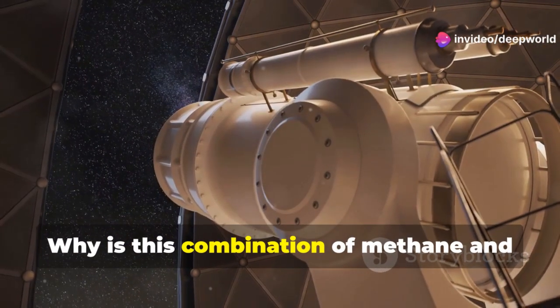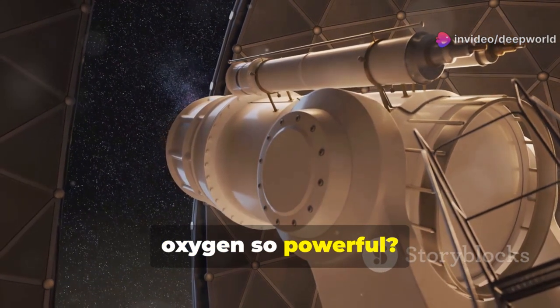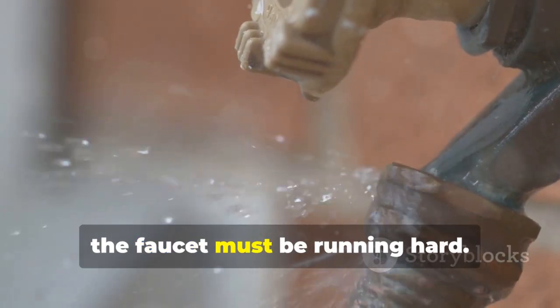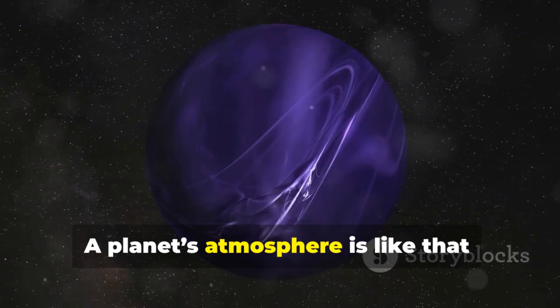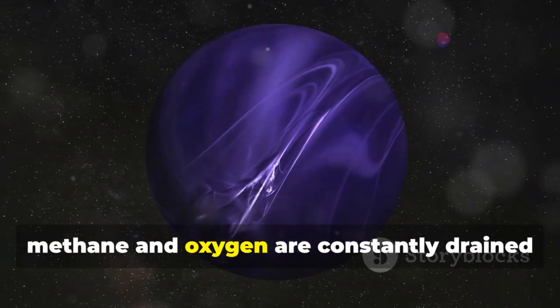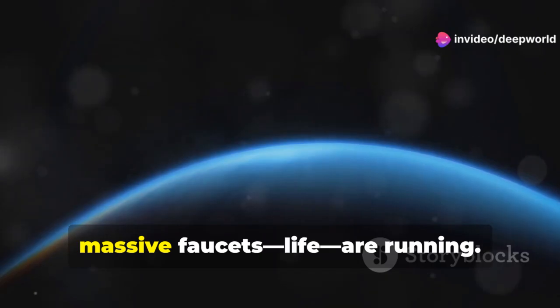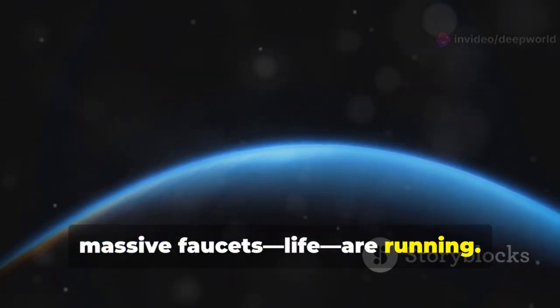Why is this combination of methane and oxygen so powerful? Imagine a bathtub with the drain open. If it's full, the faucet must be running hard. A planet's atmosphere is like that. Methane and oxygen are constantly drained by chemistry and sunlight. To find both in abundance means two massive faucets—life—are running.